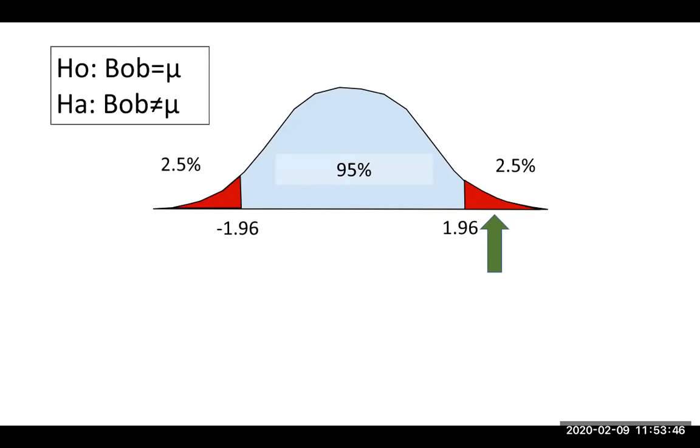So if I had set up my null and alternative to look like this, I wanted to know if Bob was the same as μ or Bob was different from μ. If Bob's score is in this red zone, then clearly the null hypothesis is wrong. If the null hypothesis is wrong, then we want to make a decision about the null hypothesis that reflects that.